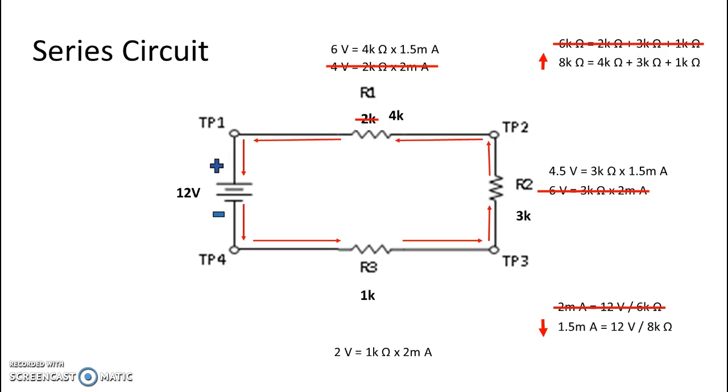Similarly, in R3, we see our original voltage of 2 volts has changed. It is now 1.5 volts, which is 1k ohm multiplied by 1.5 milliamps.